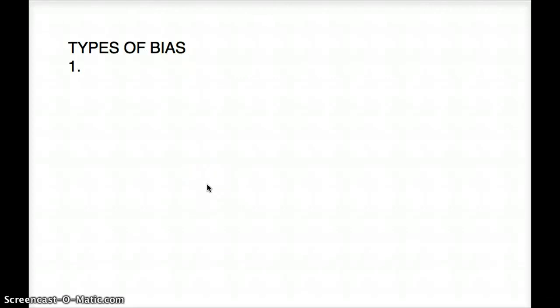Hello friends, welcome back to another tutorial. In this video I'm going to be talking about different types of bias. There are about seven types of different biases, and whenever you're thinking of a bias — an experiment that has this bias giving us not the exact value but a skewed value — you should always be thinking about what kind of solution you can offer to combat that bias.